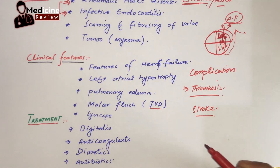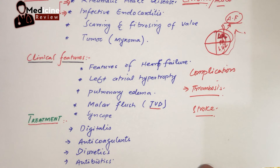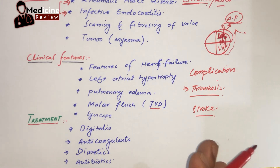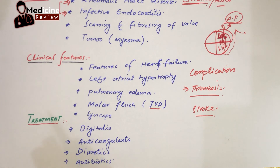Regarding treatment, the symptomatic treatment options are as follows. For definitive treatment, you need to go for prosthetic valve replacement — transplanting the damaged valve with a prosthetic valve.